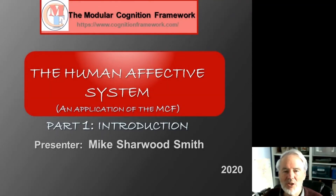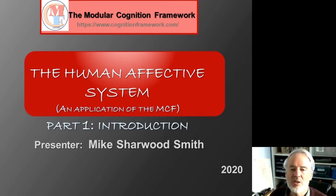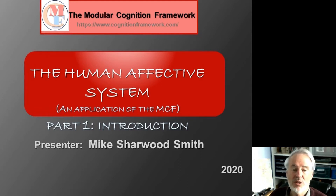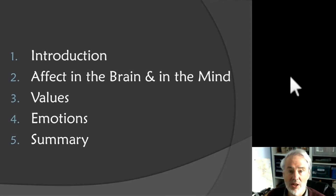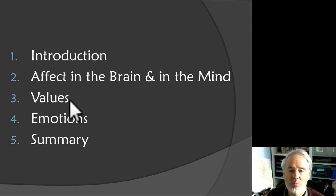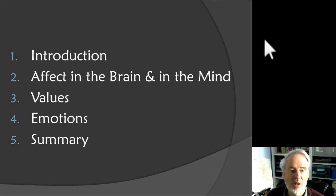Hello, I'm Mike Sherwood-Smith speaking to you from Edinburgh in Scotland. This talk is about the human affective system, an application of the modular cognition framework about which I'll say a few words in the introduction. Here is an overview: firstly the introduction, then affect in the brain and in the mind — two different levels of description and explanation, important to keep distinct — then values, perhaps the most important part of the affective system, and then emotions, ending with a summary.